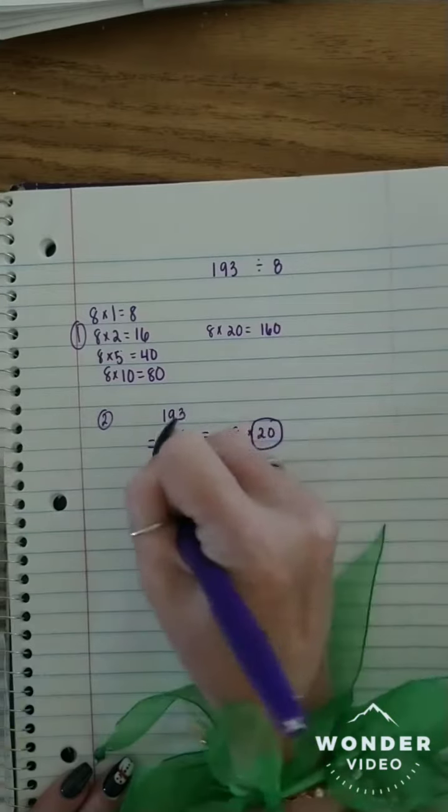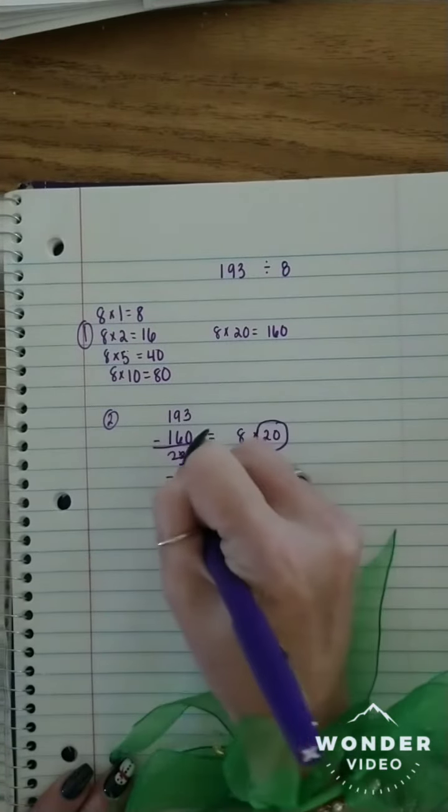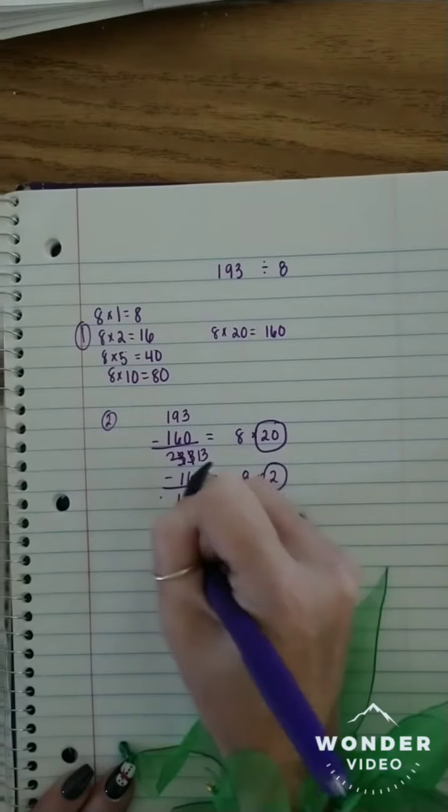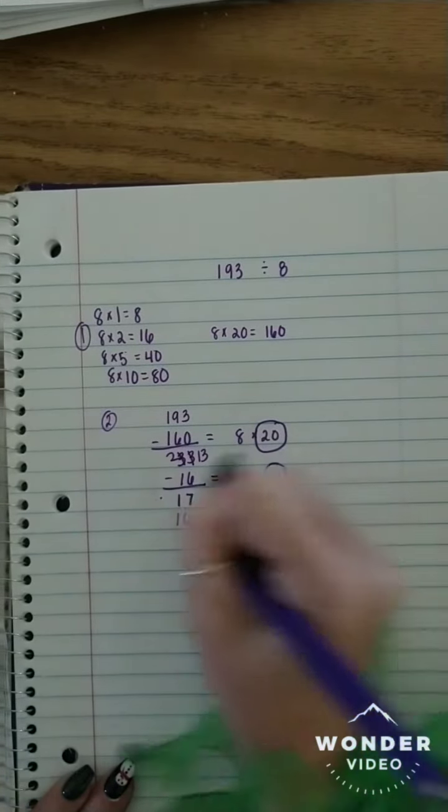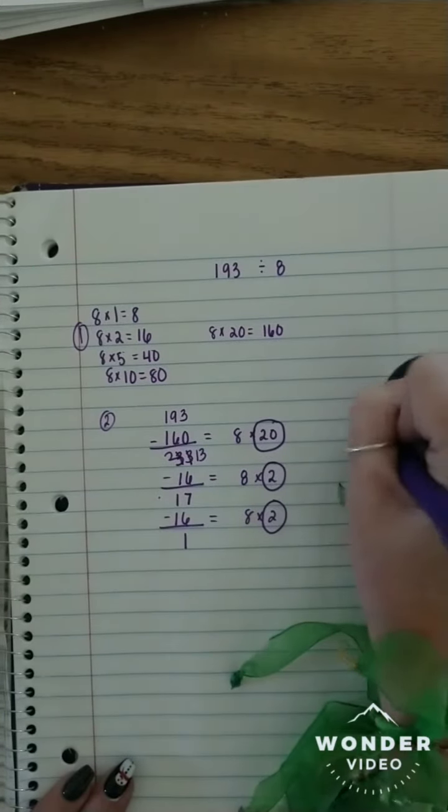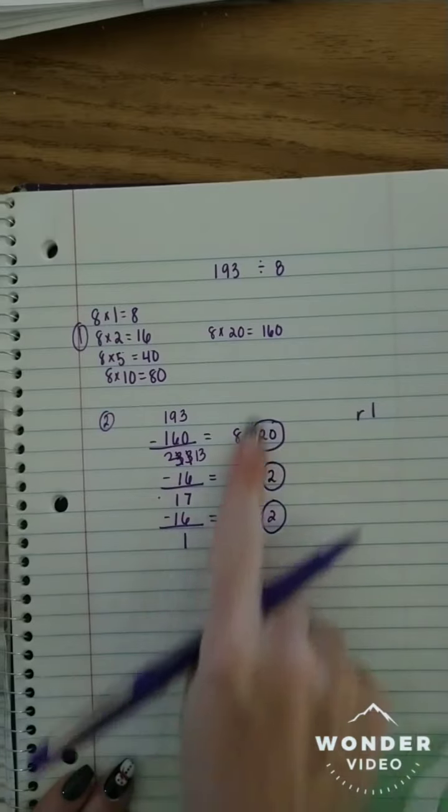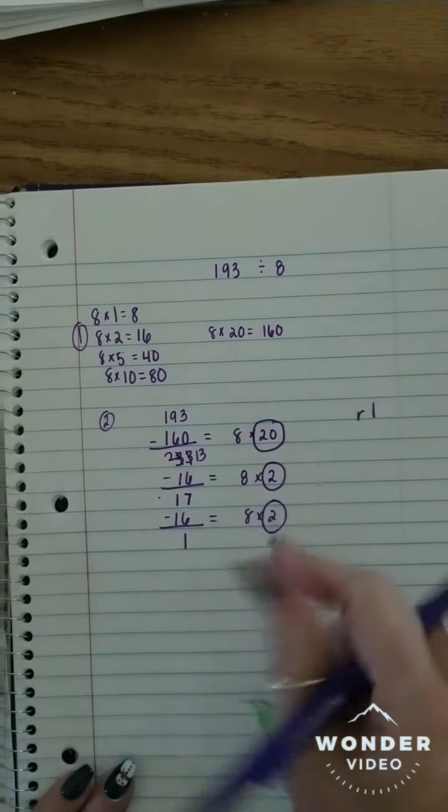Circle the 2. So that is 13, 2. That's 7, that's 1, that's 17. I can do another 16. 8 times 2. Circle the 2. That leaves me with 1 left over. So my remainder is 1 because it's less than my divisor. My divisor was 8. And then I just add all these circles together to get my quotient.